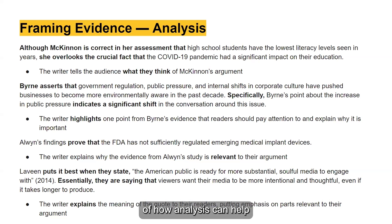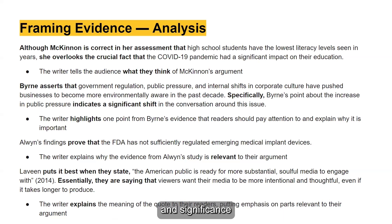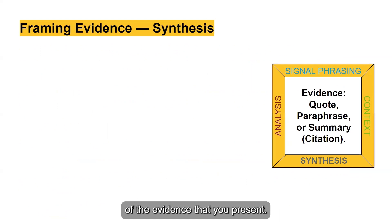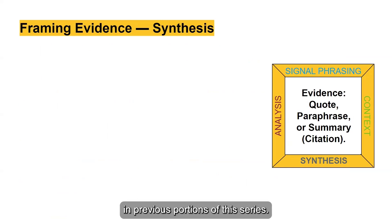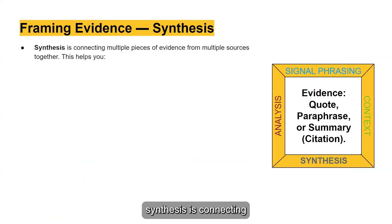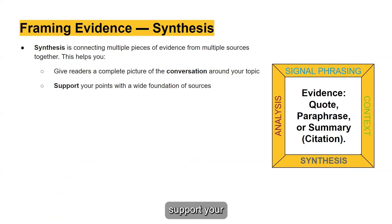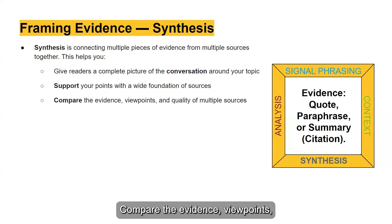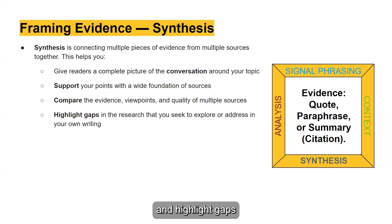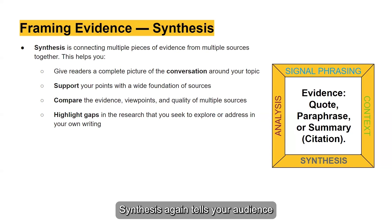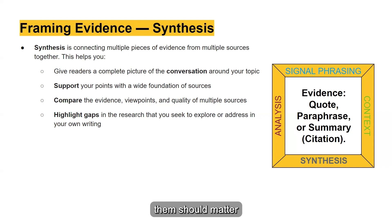These are all examples of how analysis can help frame your evidence for your reader. Analysis tells your reader the meaning and significance of the evidence that you present. Moving on, another form of framing evidence is synthesis. Synthesis is connecting multiple pieces of evidence from multiple sources together. Synthesis helps you give readers a complete picture of the conversation around your topic, support your points with a wide foundation of sources, compare the evidence and viewpoints of multiple sources, and highlight gaps in the research that you seek to address in your own writing.